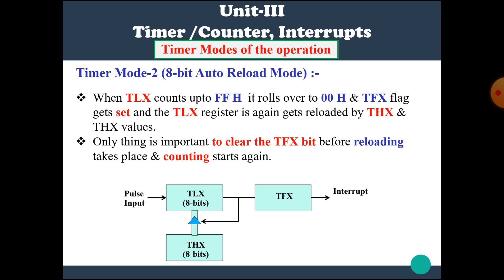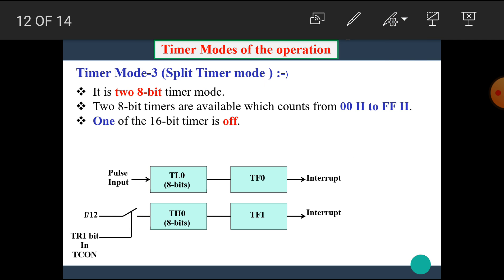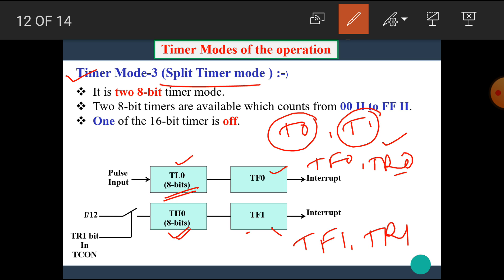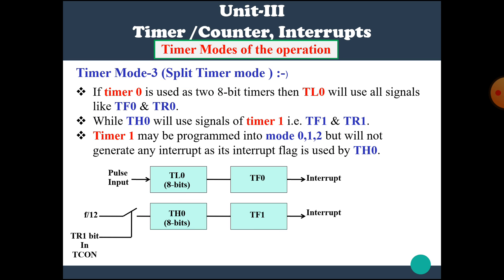Timer mode 3 (split timer mode): TL0 and TH0 act as separate timers. When using TL0, the flags TF0 and TR0 are used. When using TH0, the flags TF1 and TR1 are used. I hope you all understand all the four modes of timer and counter. Thank you.